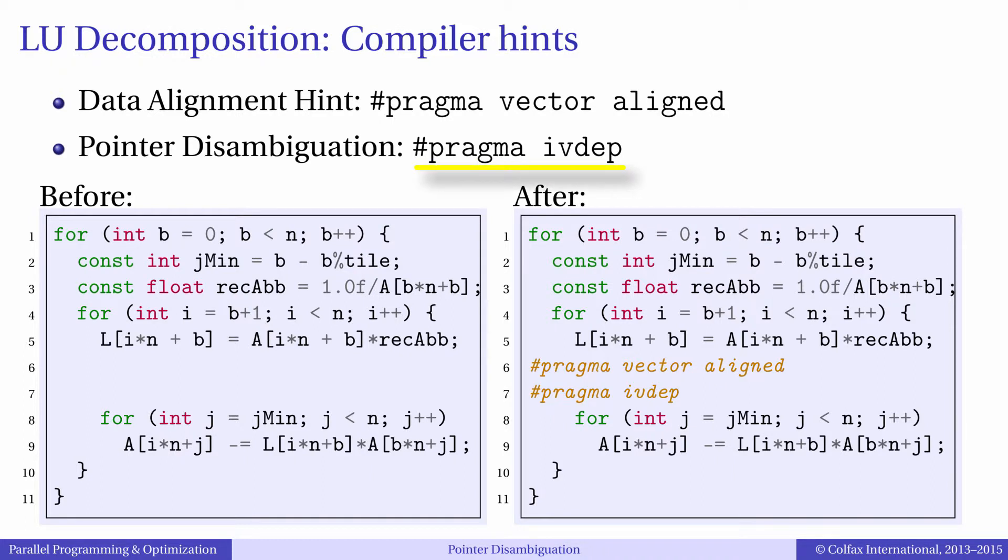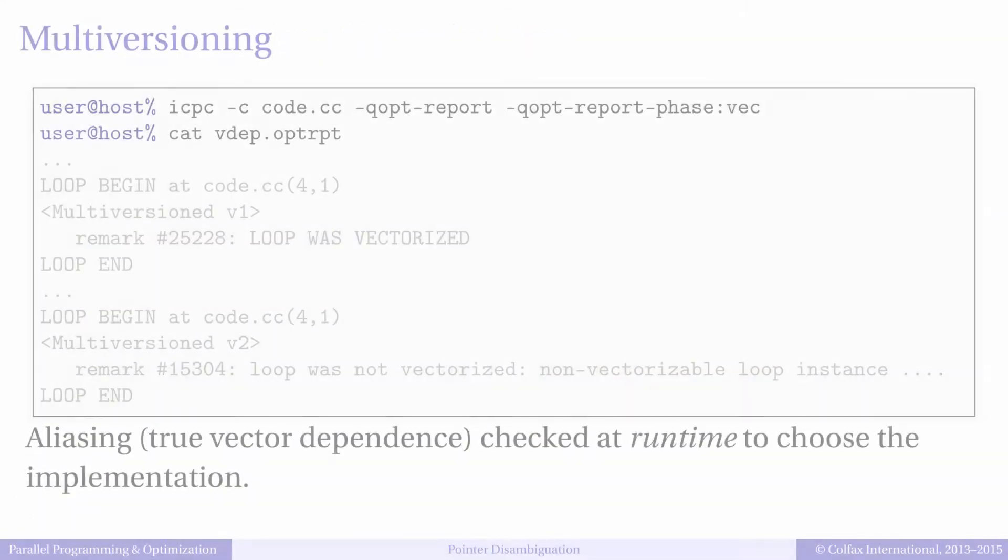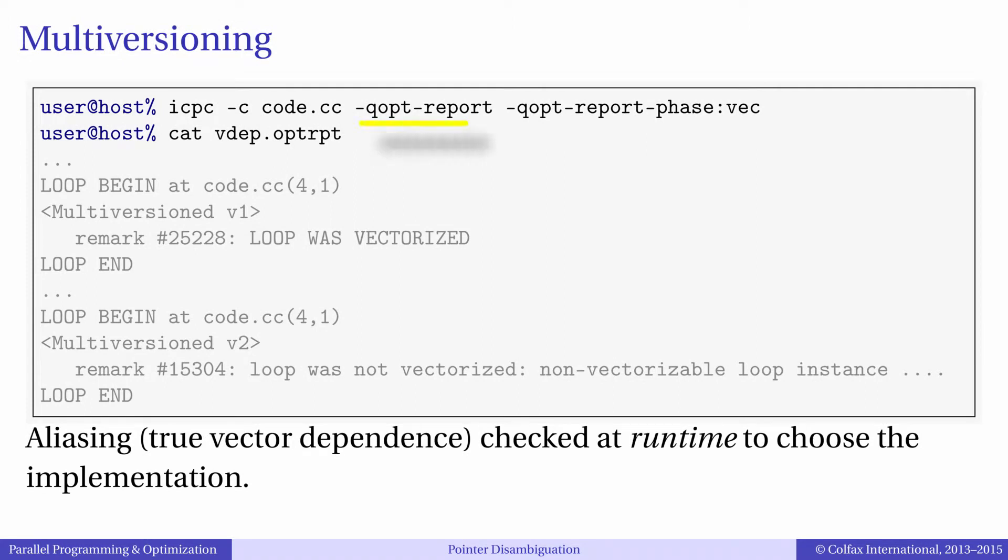pragma ivdep is a hint to the compiler that there is no vector dependence in this loop. Because index-based references here are complex, the compiler may not be able to figure out if the address ranges in the left-hand side and in the right-hand side of line 9 are overlapping or not. With pragma ivdep, we guarantee that they do not overlap, and so vectorization is safe.